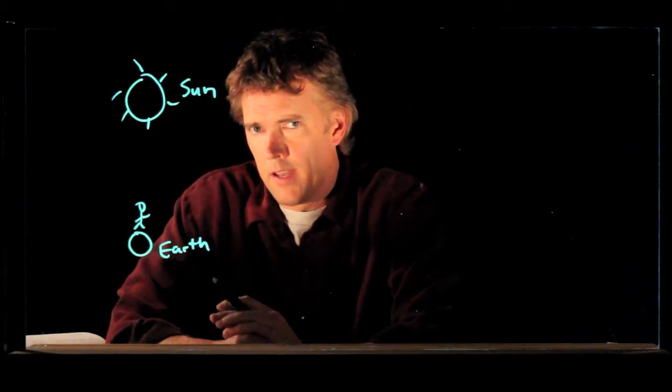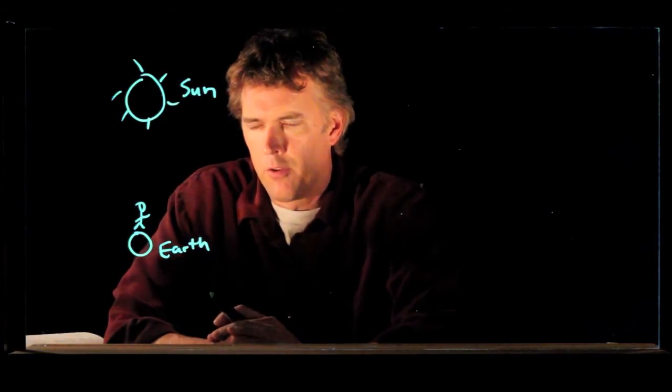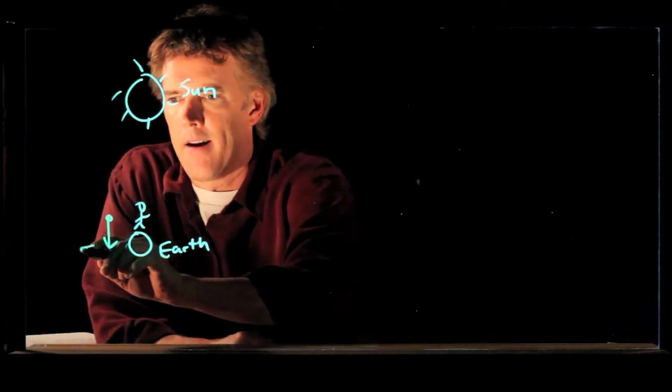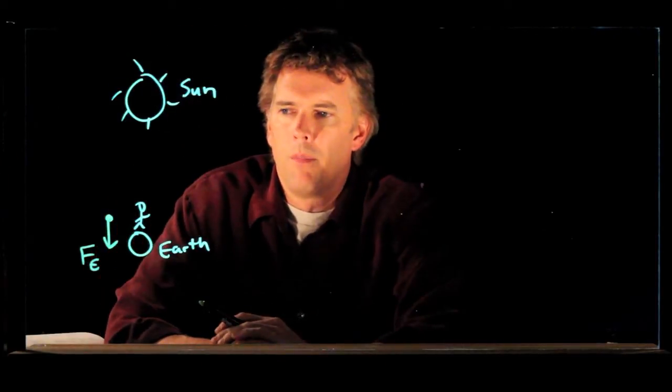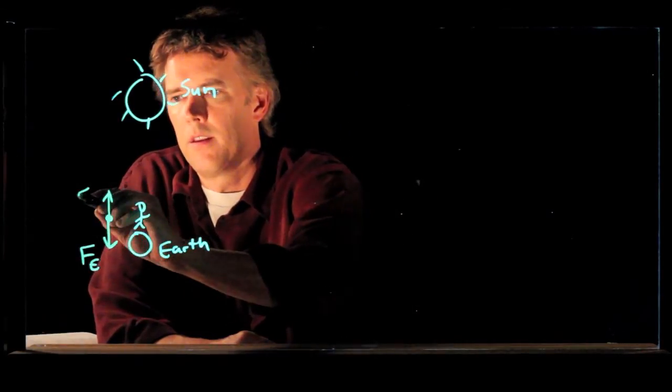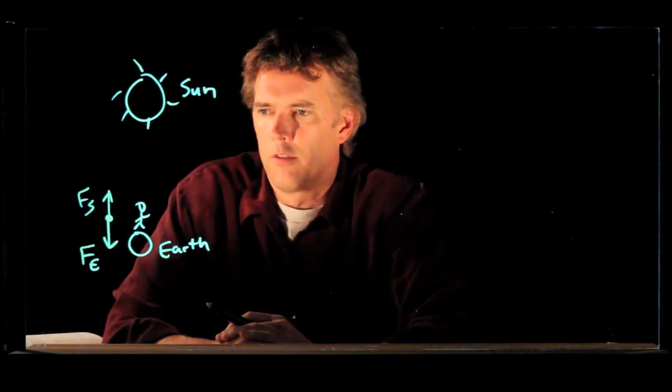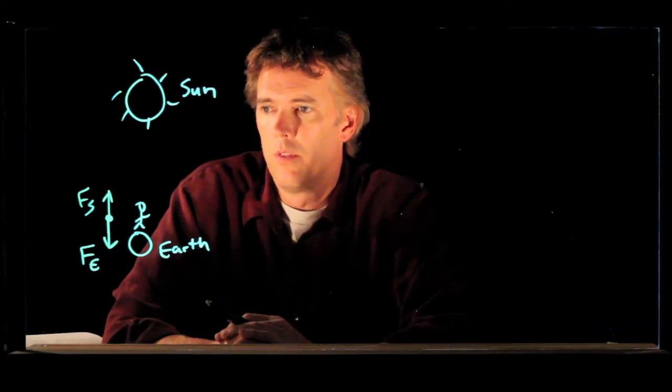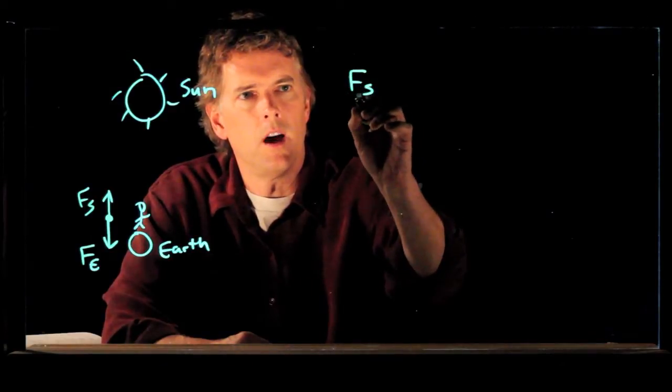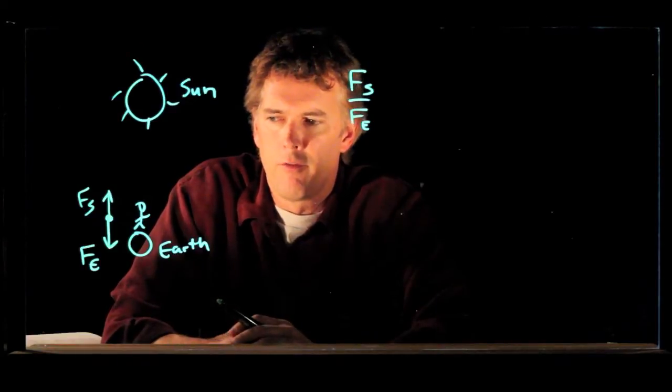So gravity acts between all objects in the universe that have mass, and so there is a force on you due to the earth and we will call that F sub earth. But there is of course another force on you which is due to the sun. The sun is pulling on you just like it's pulling on the earth. So there is a force on you due to the sun. And let's see if we can calculate the ratio of the force due to the sun divided by the force due to the earth.